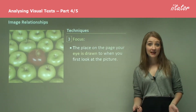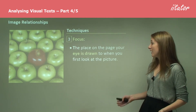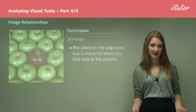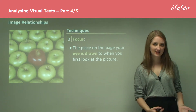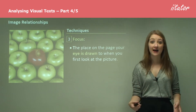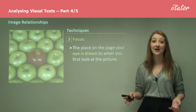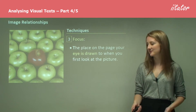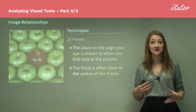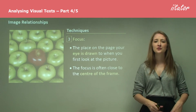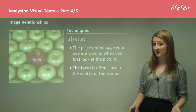A third technique which you can use is focus. This is the place on the page where your eye is drawn to when you first look at the picture — we talked about that when we were looking at how to analyze an image. So what stands out? In this image, color is used to make the red apple stand out from all of the rest. The focus is also often close to the center of the image, so if you look to the very middle, that's often where you're going to see what the focus is.